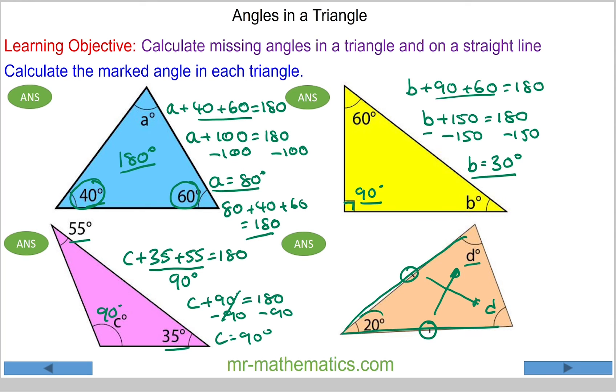Now you have 20 degrees plus 20 degrees plus this d plus the other d must equal 180. So 20 plus 2d will equal 180. We'll take away the 20 from both sides, which is 160.